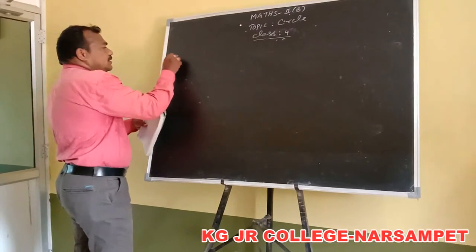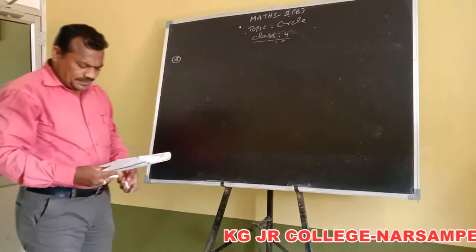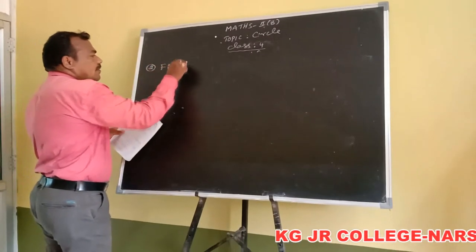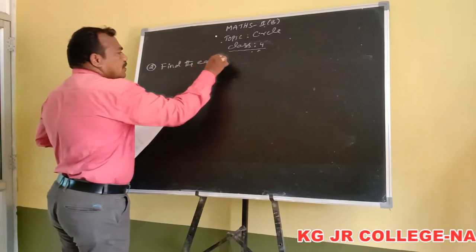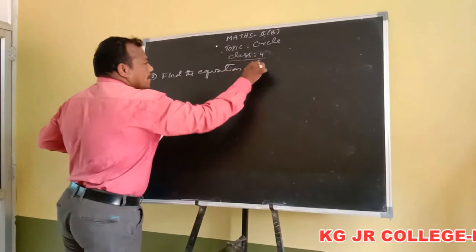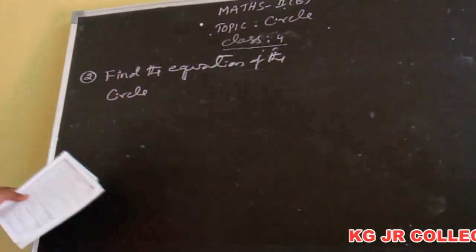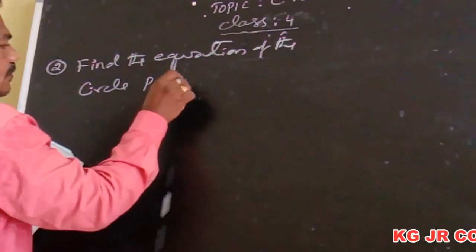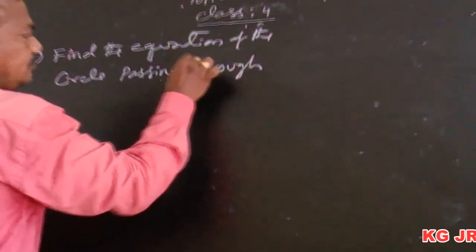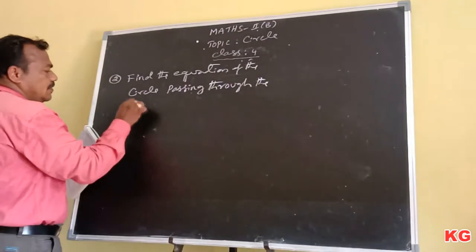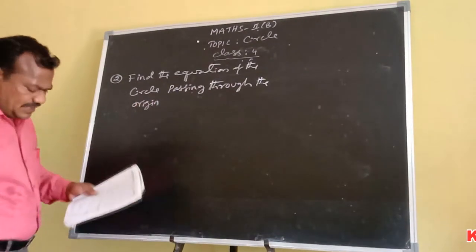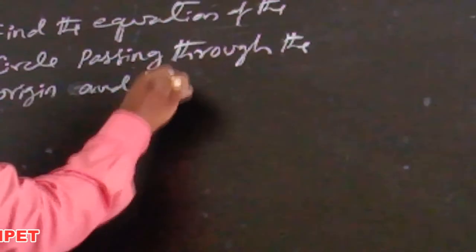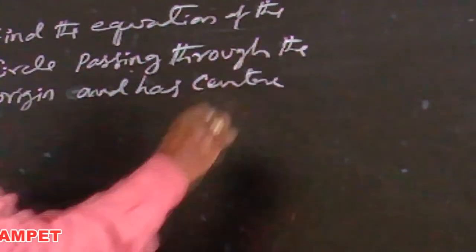Problem number two. Problem number three: find the equation of the circle passing through the origin.